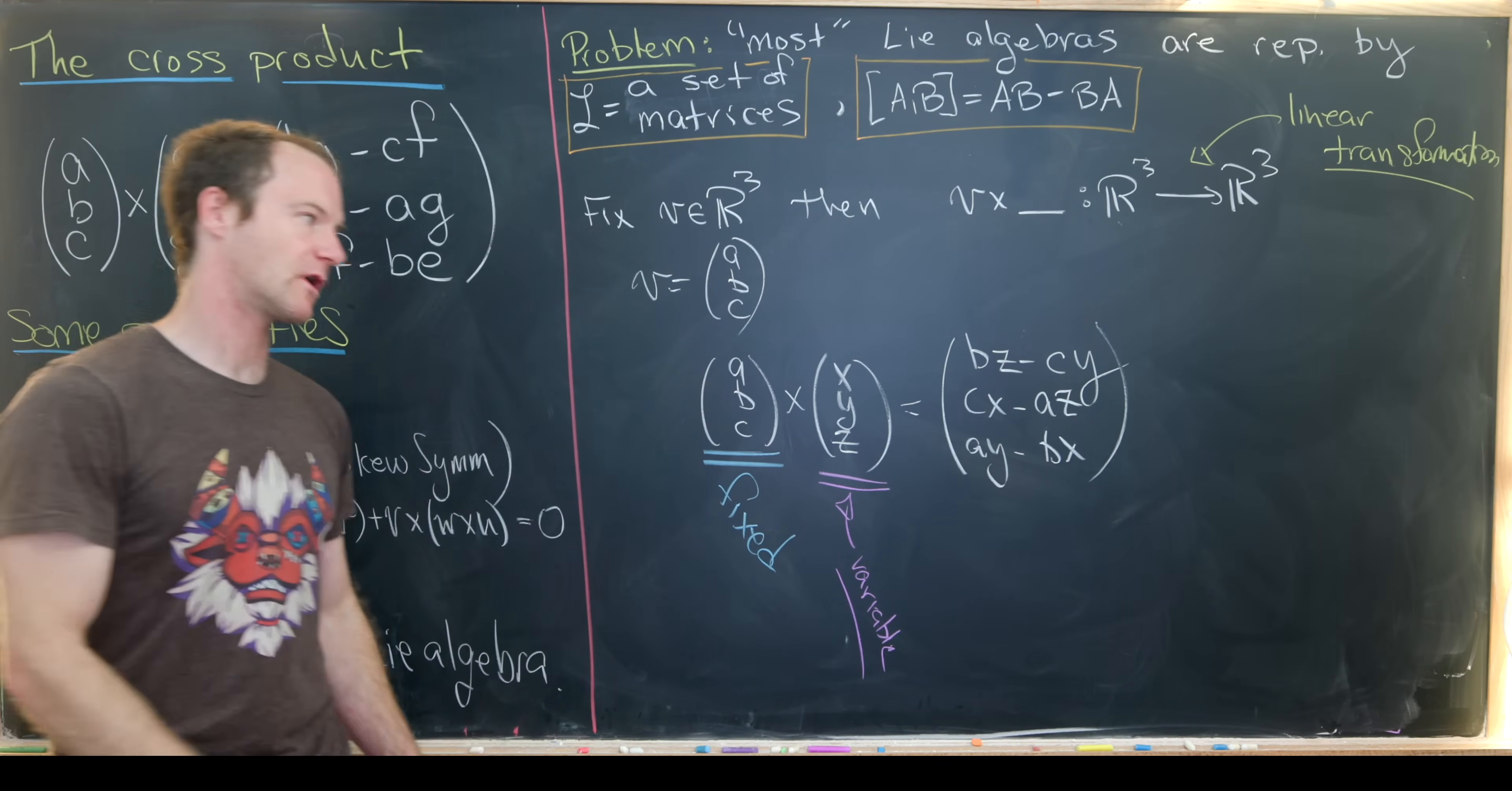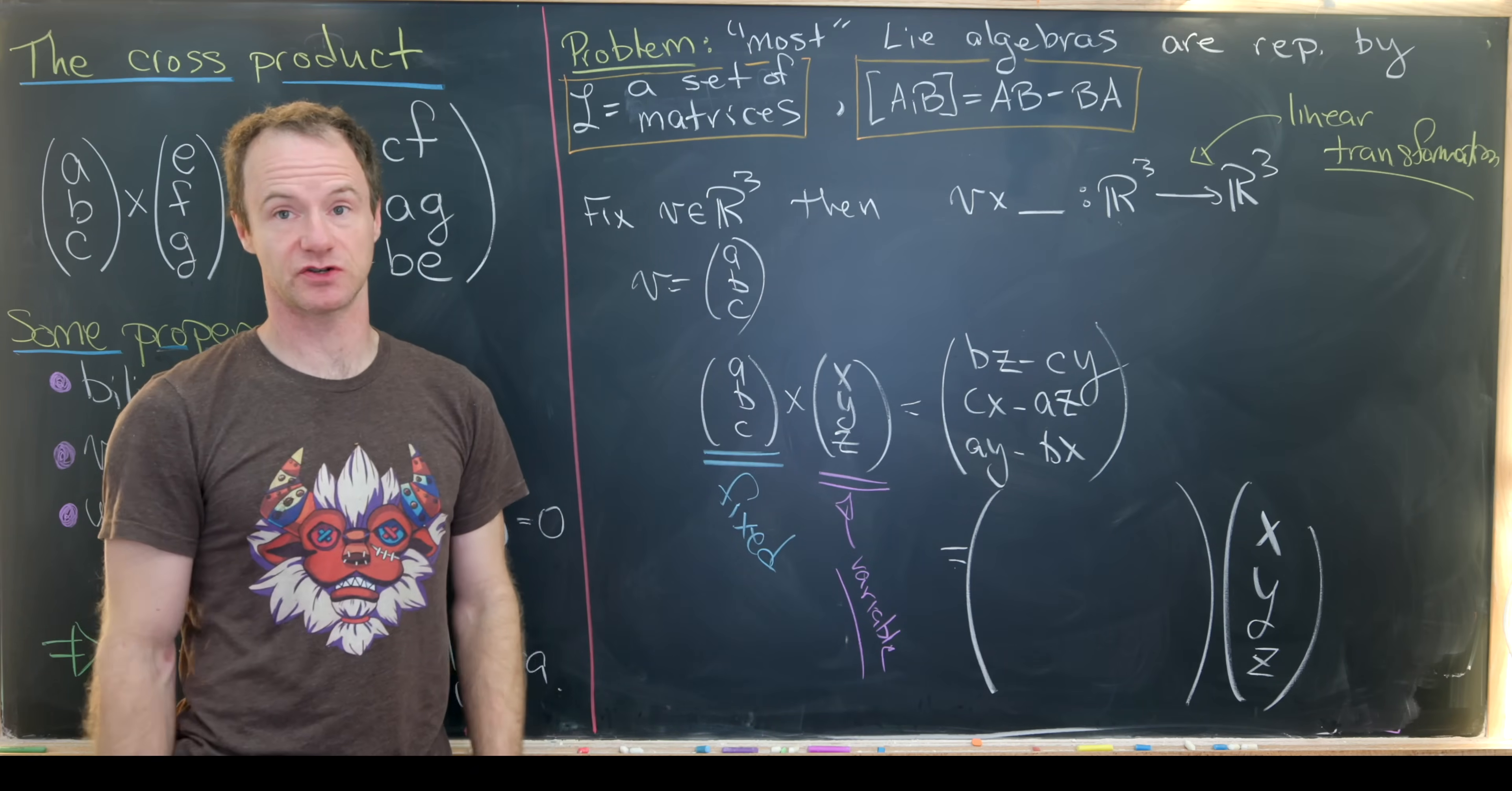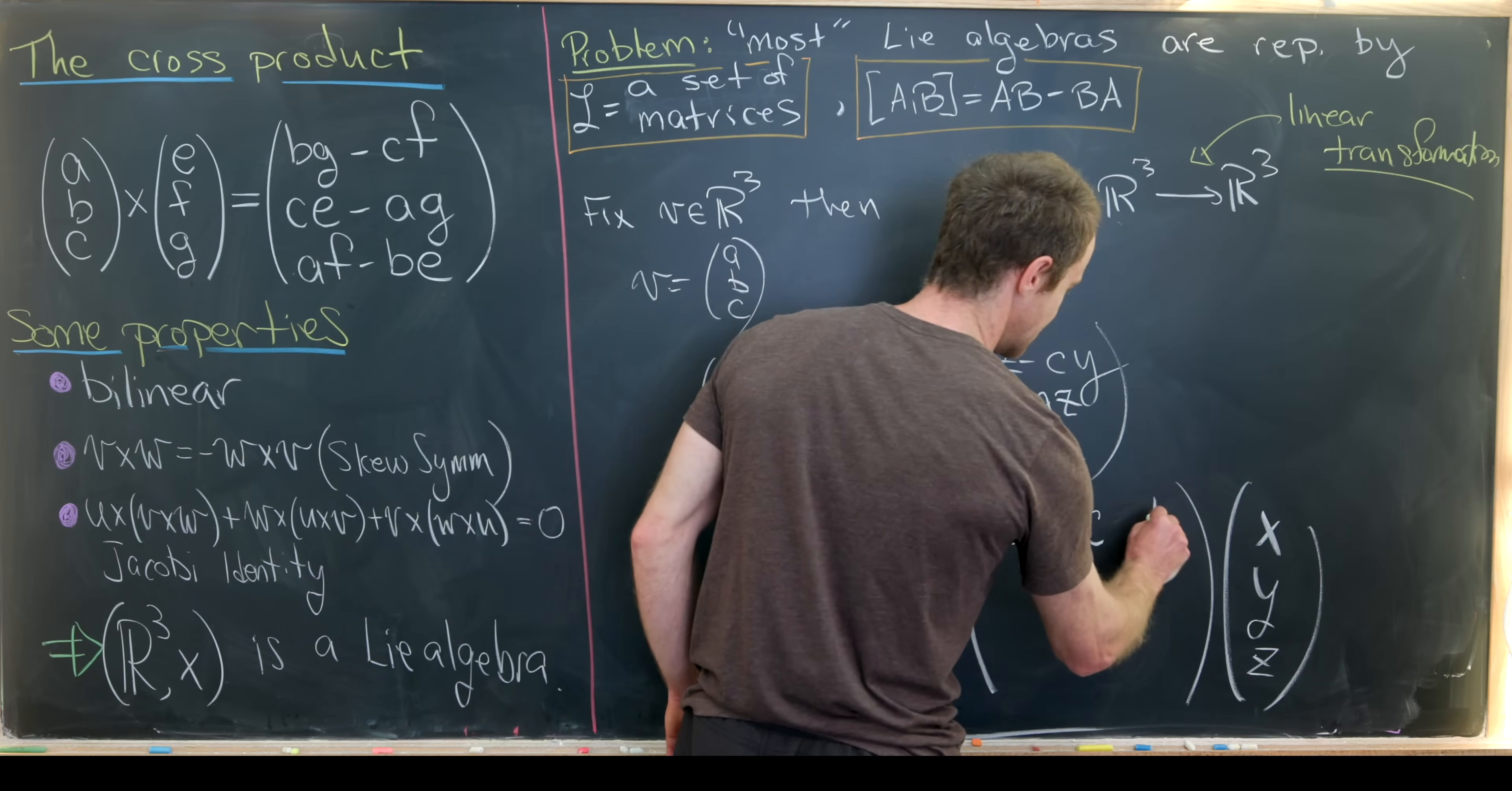So like I said, this should be able to be represented by a matrix. So we should have a three-by-three matrix times this variable vector XYZ. But it's not too hard to figure out what this matrix is just by looking at the entries. So notice there's nothing attached to X in the first entry. So that means this first entry in the first row here must be zero. Then we see that the number attached to Y is negative C. That puts a negative C here. And then the number attached to Z is B.